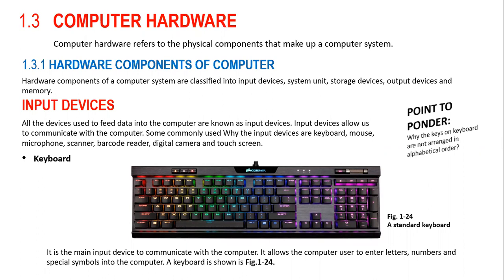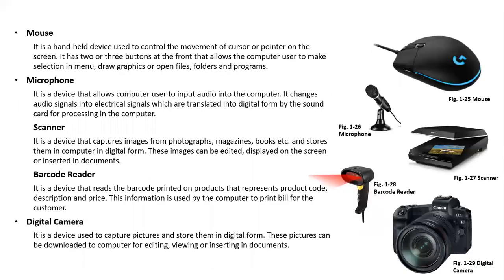Keyboard is the main input device to communicate with the computer. It allows the computer user to enter letters, numbers and special symbols into the computer. The second input device is mouse. It is a handheld device used to control the movement of the cursor or pointer on the screen. It has two or three buttons that allow the user to make selections in menus, draw graphics or open files, folders and programs.